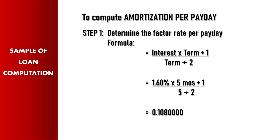How to compute your amortization per payday? First, we have to determine the factor rate per payday. The formula is: interest multiplied by (term plus 1) over (term divided by 2). So we have 1.6% add-on interest rate multiplied by (5 months plus 1) over (5 months divided by 2). The factor rate per payday is 0.108.